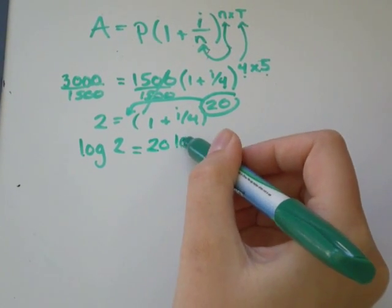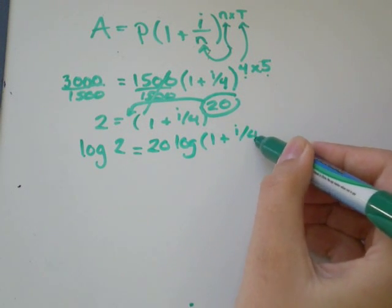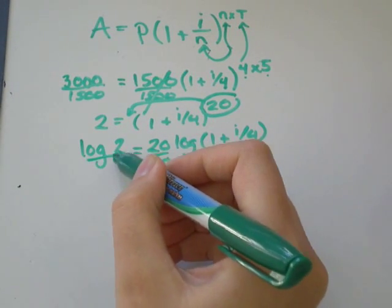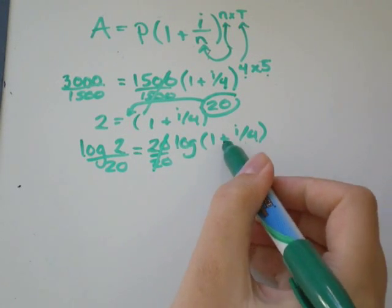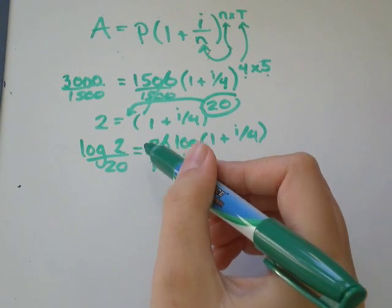The power rule says that the exponent will actually come in front of our log. So I'll have 20 log of 1 plus i over 4. So what I'm going to do is divide both sides by 20 so that these will cancel out, and I'll just be left with the log of something on this side and some decimal on this side.